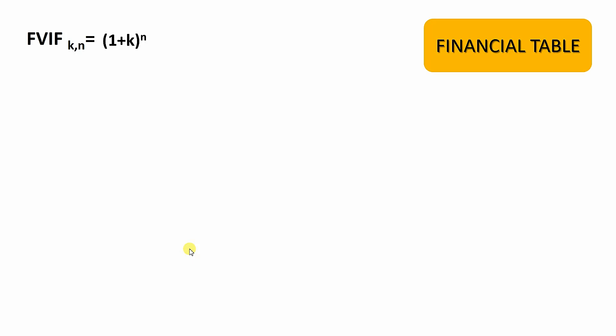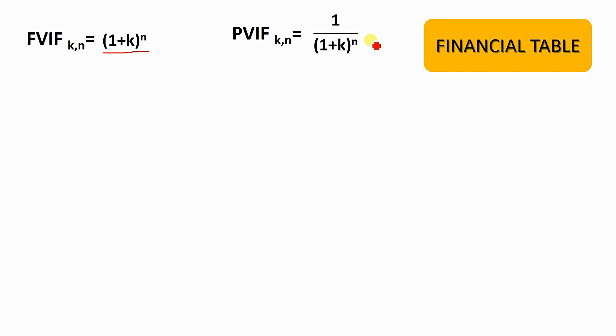For present value, we use PVIF — the Present Value Interest Factor. The formula is 1 divided by (1 plus k) to the power n. This value is also available in the financial table. The present value interest factor helps us determine how much a future amount is worth today.